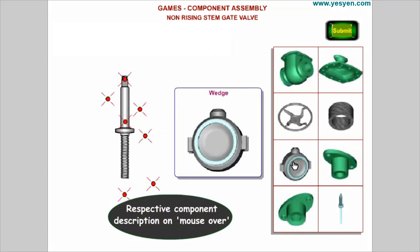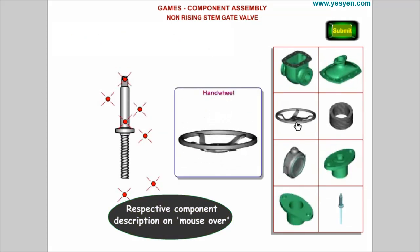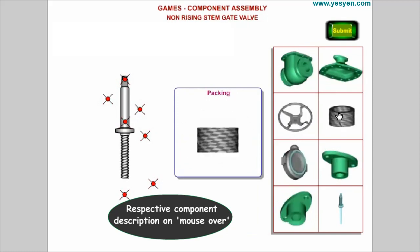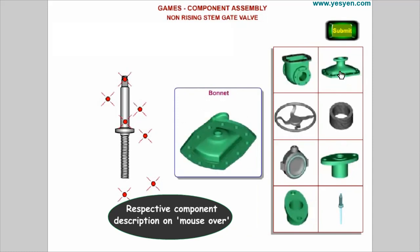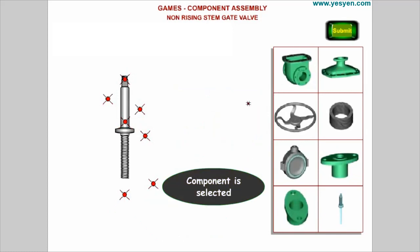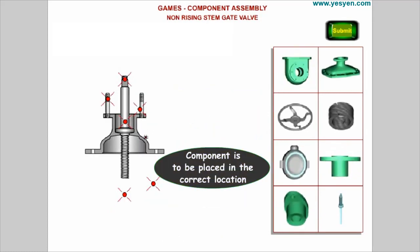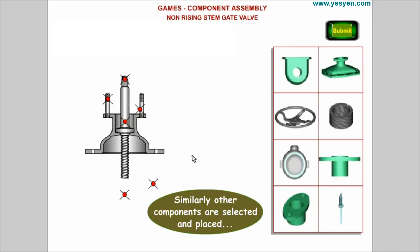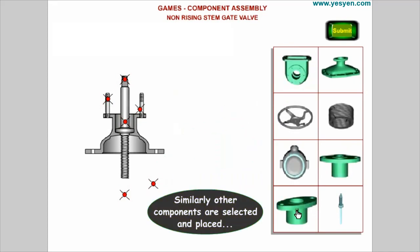Respective component description on mouse over. Component is selected. Component is to be placed in the correct location. Similarly, other components are selected and placed.